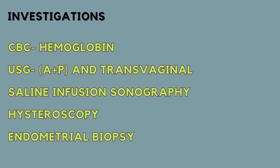Investigations to rule out uterine fibroids include a complete blood count to rule out anemia, especially if the woman complains of heavy menstrual bleeding. Ultrasonography gives an idea about the size, location, and number of fibroids. Transvaginal sonography may also be ordered. For better understanding of submucosal fibroids, saline infusion sonography highlights intracavitary fibroids. Hysteroscopy also helps identify intracavitary fibroids. In women above 40 years, endometrial biopsy is important to rule out endometrial hyperplasia or cancer.